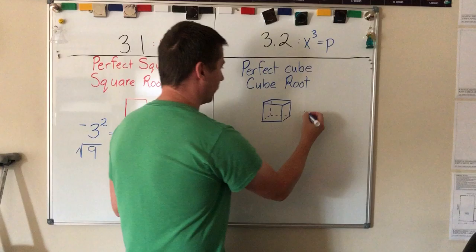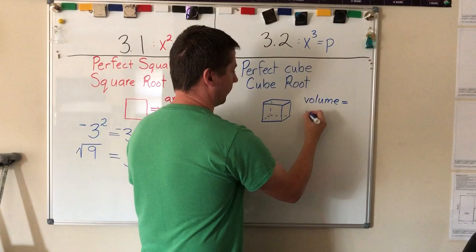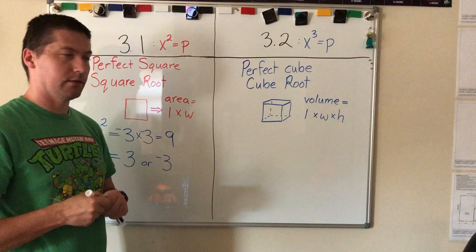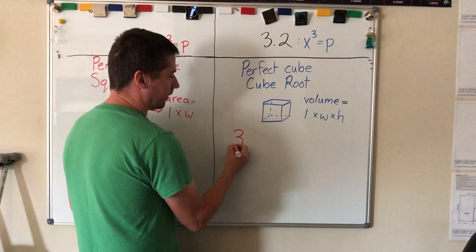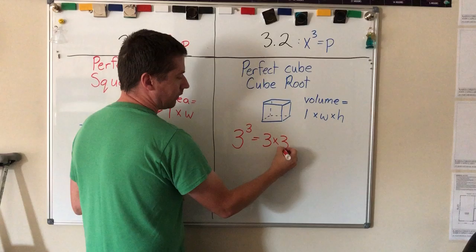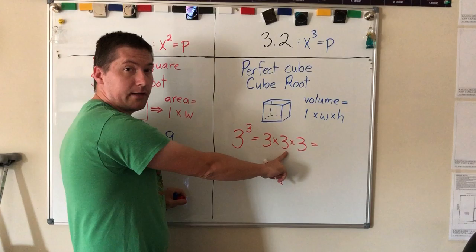And that's where we get the three numbers or three dimensions: length times width times height. So let's use the same number and let's see what this comes out with. Remember we put our base - our base is three - we're going to follow this formula here: 3³ equals...